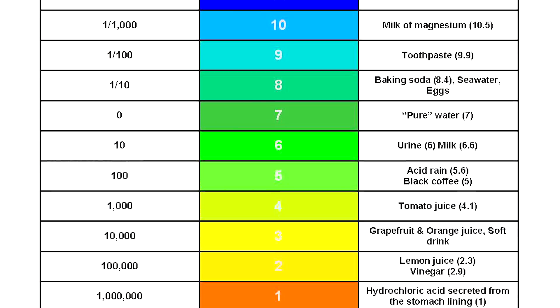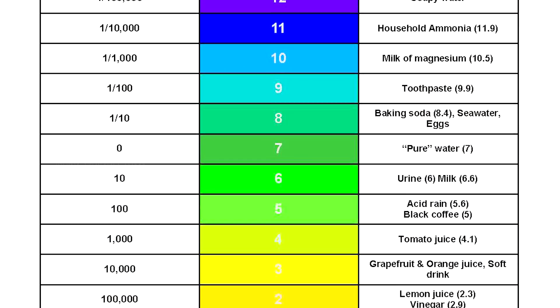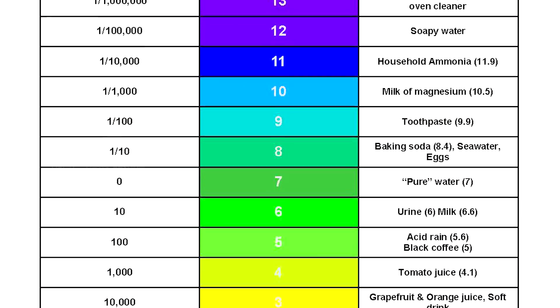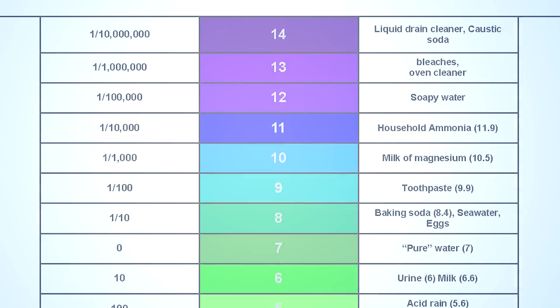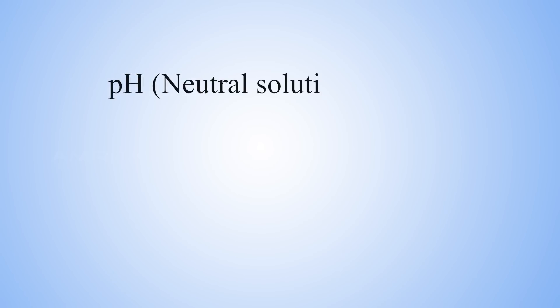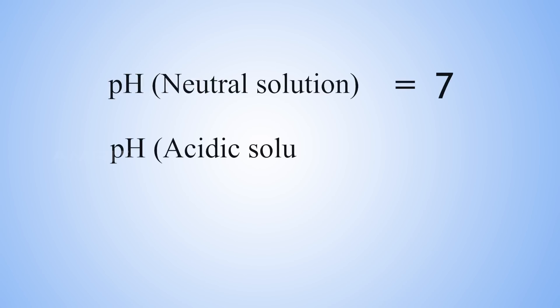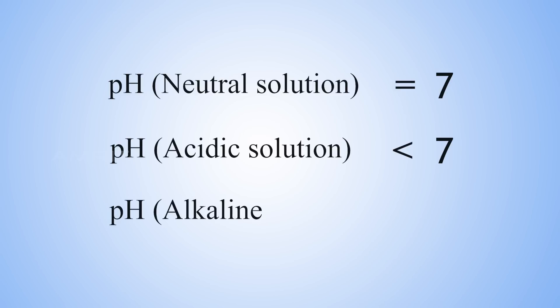pH is measured on a scale of 0 to 14. The pH of a neutral solution is 7, acidic solution is less than 7 and alkaline solution is greater than 7.